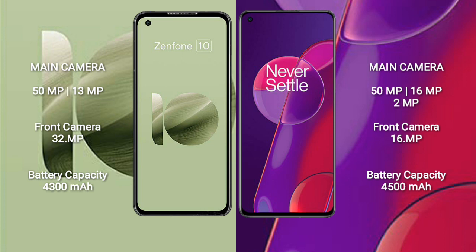The Asus Zenfone 10 has a 4300mAh battery with 30W fast charging support, while the OnePlus 9RT has a 4500mAh battery with 65W fast charging support.